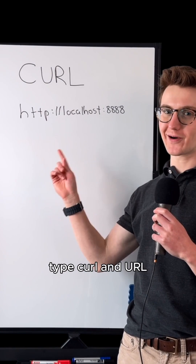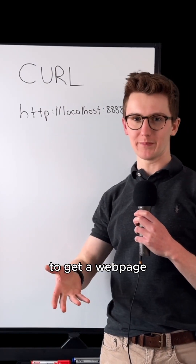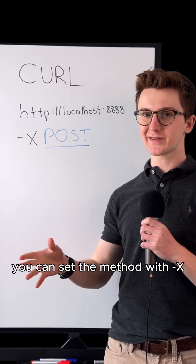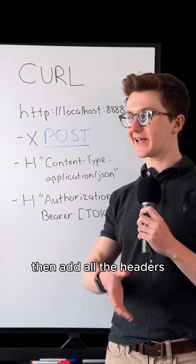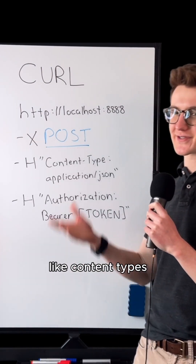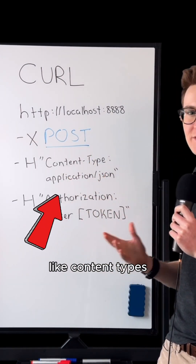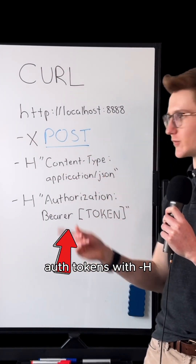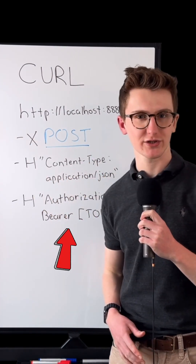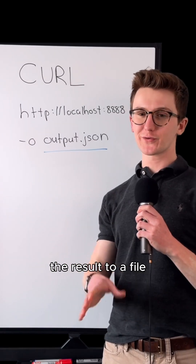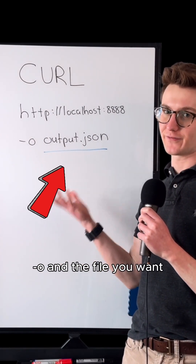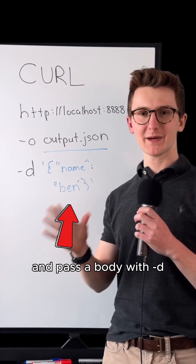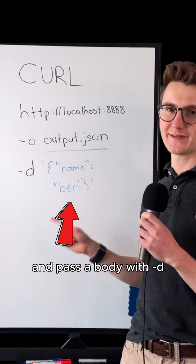Type cURL and a URL to get a web page. You can set the method with -X, then add all the headers like content types and auth tokens with -H. If you want to write the result to a file, use -o and the file you want, and pass a body with -d.